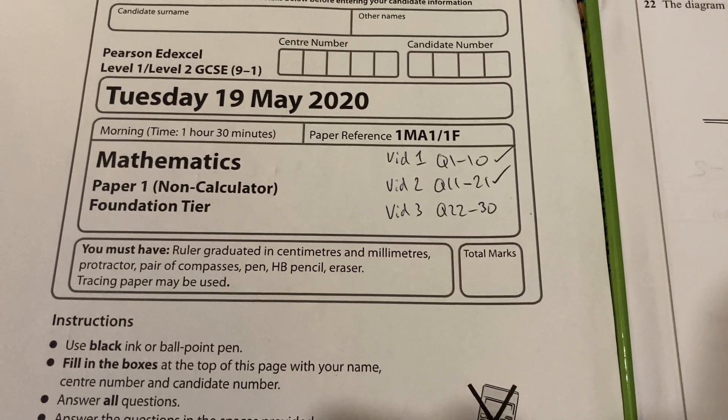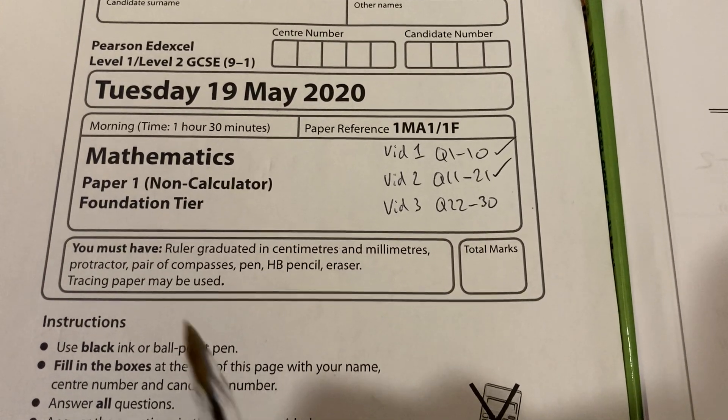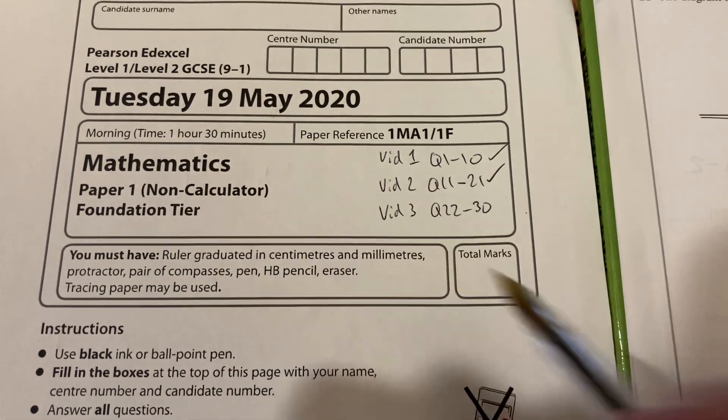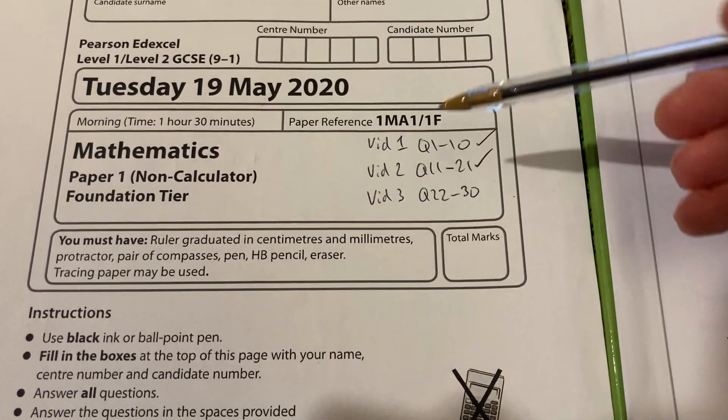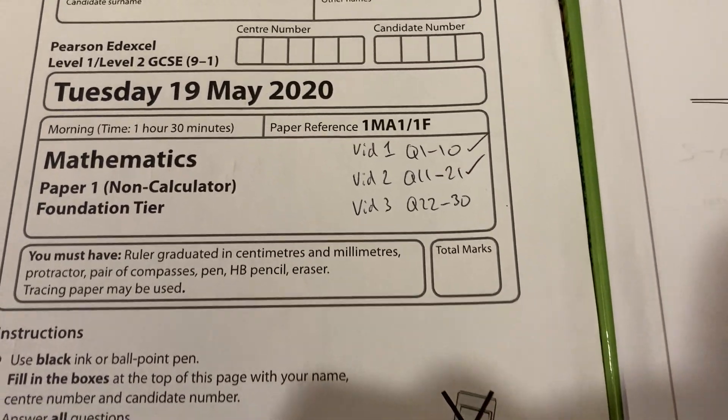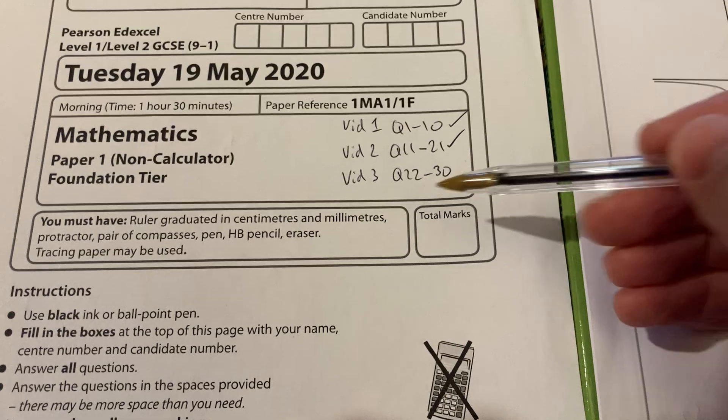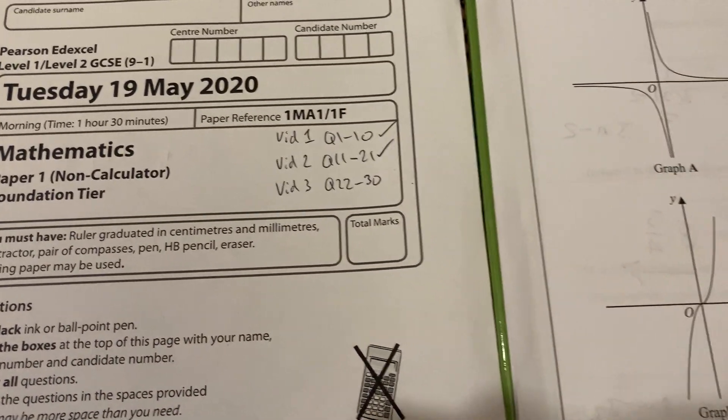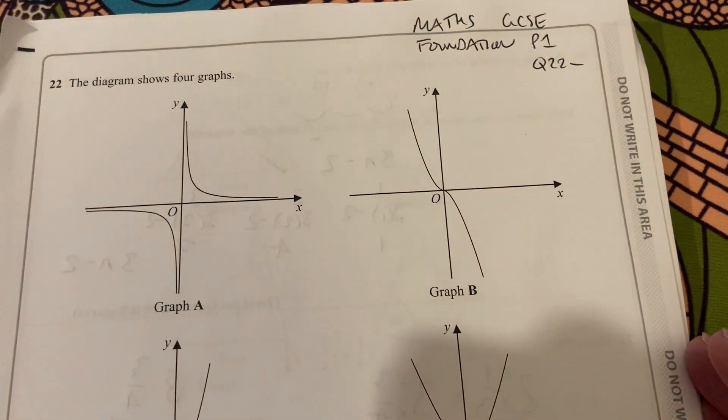Hello and welcome to Martin Maths. We're continuing the third of the Maths Foundation GCSE May 2020 paper. If you have a look at the other videos, question 1 to 10, and the second video I did was question 11 to 21. So this video will complete the non-calculator paper from 2020. Okay, so we're going to start with question 22.